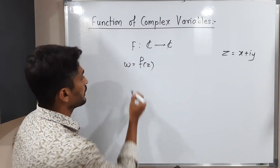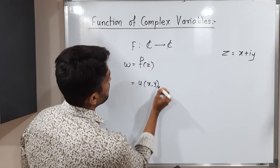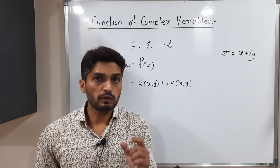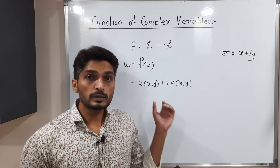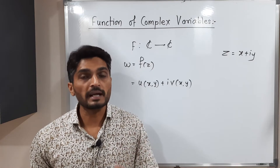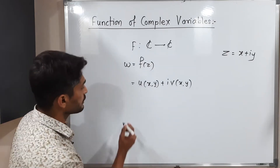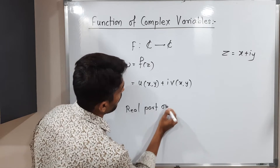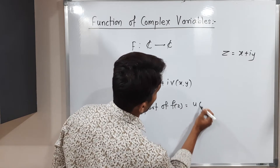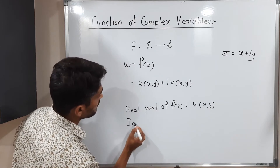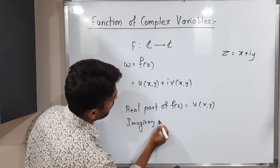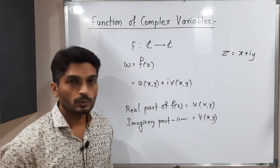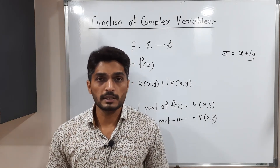We denote it as u(x,y) + i·v(x,y), where u and v are both functions of x and y. Here u is called the real part of the function and v is called the imaginary part of the function. We write: real part of f(z) = u(x,y), and imaginary part of f(z) = v(x,y). This is a very important concept.